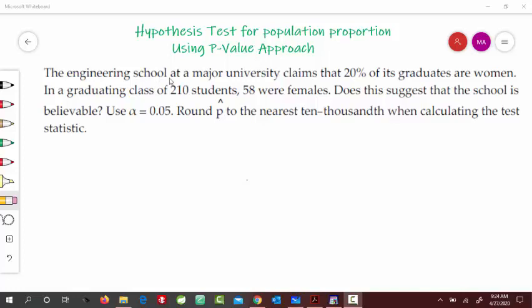The engineering school at a major university claims that 20% of its graduates are women. In a graduating class of 210 students, 58 were females. Does this suggest that school is believable? Use alpha as 0.05. Round p hat to the nearest ten-thousandth when computing the test statistic.